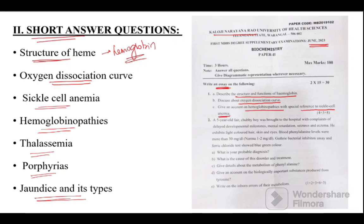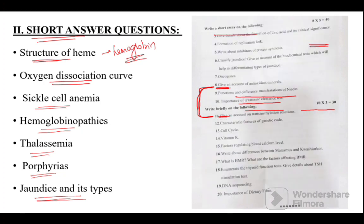So hemoglobin is a very important chapter. Combination of different short answer questions can also be asked as one structured essay question. And also if we see in this, short answer questions also classified jaundice and give an account on...